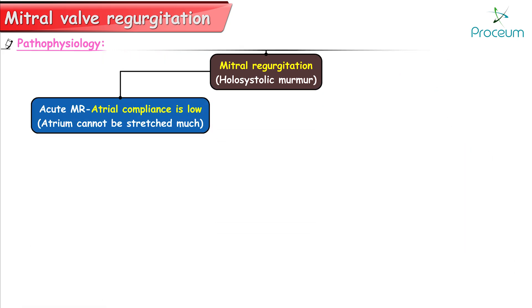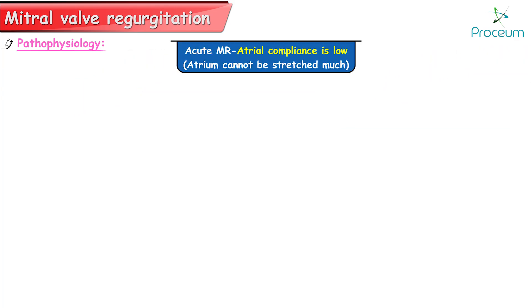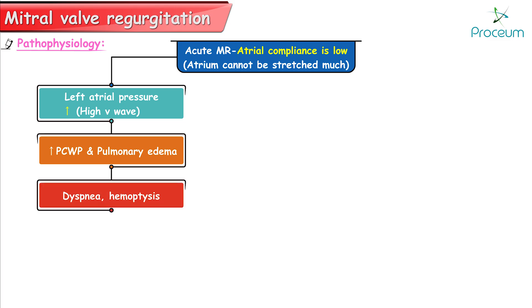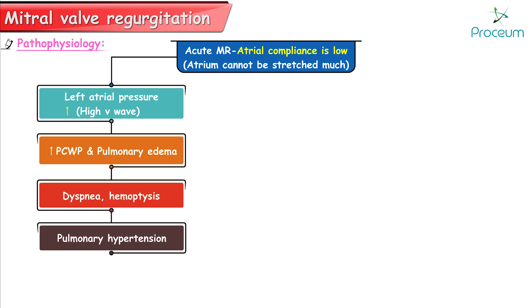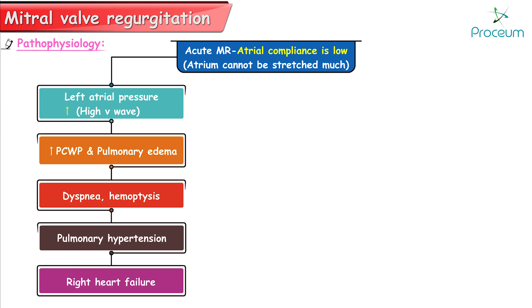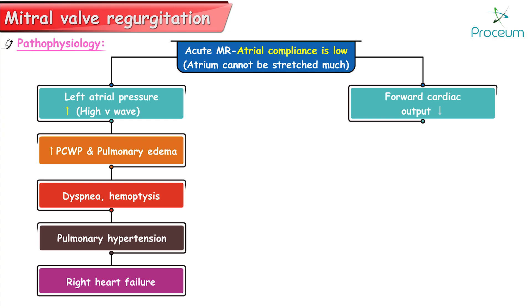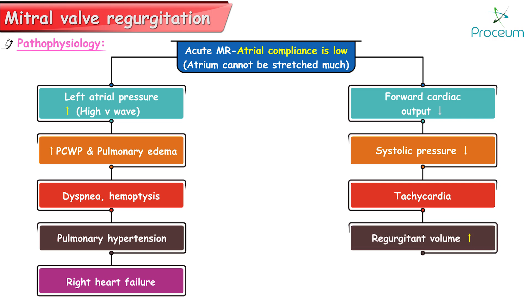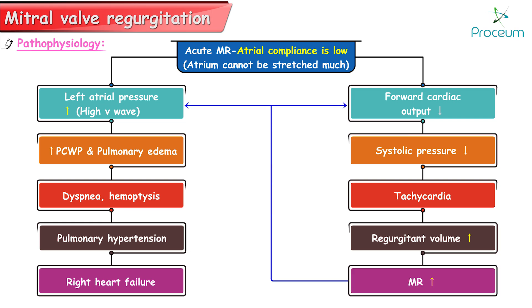Mitral regurgitation can be acute or chronic. In acute mitral regurgitation, atrial compliance is very low and the atrium cannot be stretched much. This results in increased left atrial pressure, seen on the JVP curve as a high V-wave, leading to pulmonary edema, dyspnea, hemoptysis, and pulmonary hypertension, which eventually causes right heart failure. It also results in decreased forward cardiac output, causing decreased systolic pressure, tachycardia, and an increase in regurgitant volume — thereby worsening the mitral regurgitant murmur in a vicious cycle.